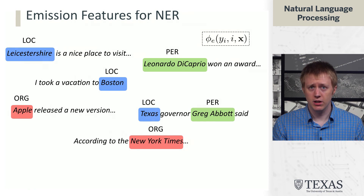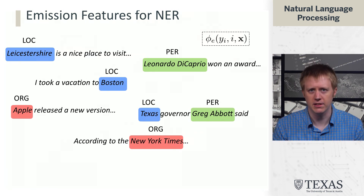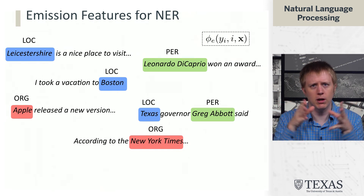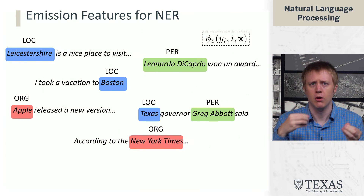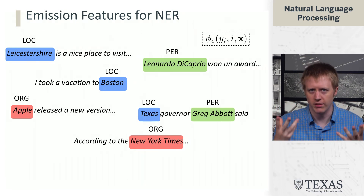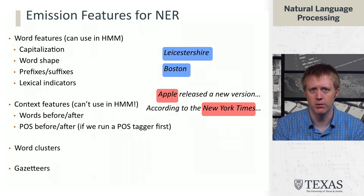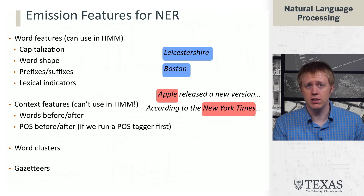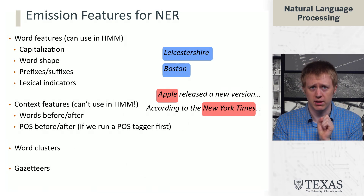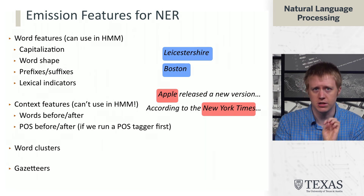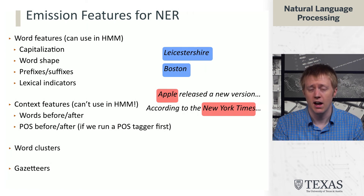A good exercise is to look at various instances of named entities in text and think about what sorts of features — both within the named entity as well as context features — might allow you to determine what type it is and whether it's there. I encourage you to go through that exercise. Now I'm just going to list off some of the most common features that get used.